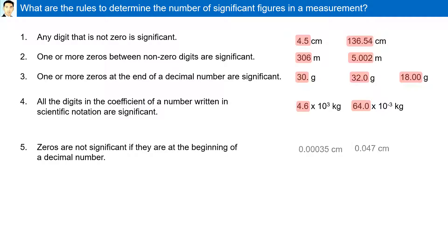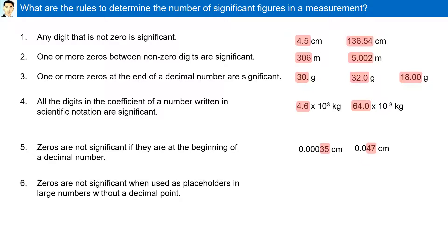Zeros are not significant if they are at the beginning of a decimal number. Zeros are not significant when they are used as placeholders in large numbers without a decimal point. These are the six rules to determine the number of significant figures in a measurement.